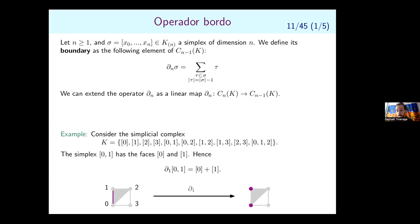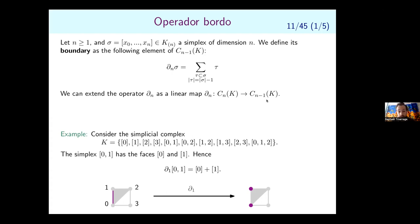Now the boundary operator: if I take a simplex, its faces are the sub-simplices of dimension n minus one. The boundary operator ∂ maps the space of n-chains to (n-1)-chains. It is defined as: the boundary of a simplex is the formal sum of its faces. It is extended linearly — the boundary of a sum of simplices is the sum of their boundaries.